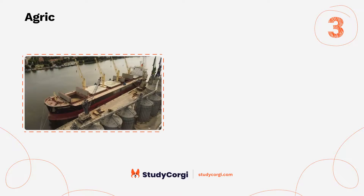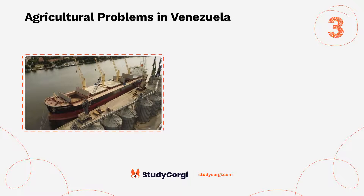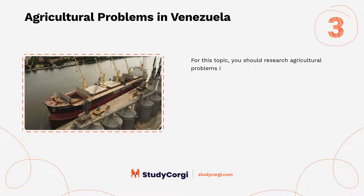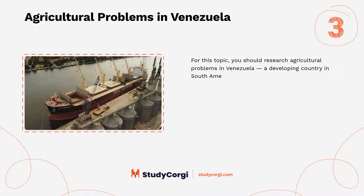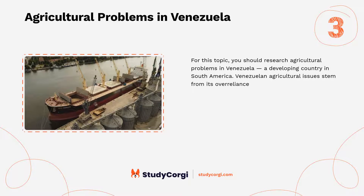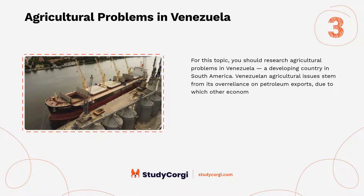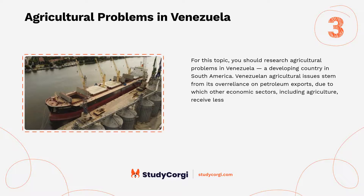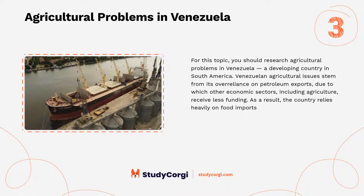Agricultural problems in Venezuela. For this topic, you should research agricultural problems in Venezuela, a developing country in South America. Venezuelan agricultural issues stem from its over-reliance on petroleum exports, due to which other economic sectors including agriculture receive less funding. As a result, the country relies heavily on food imports, which puts it at risk of food insecurity.